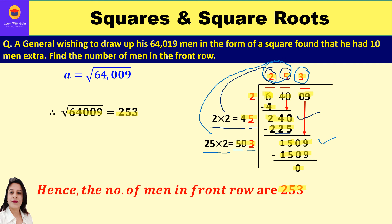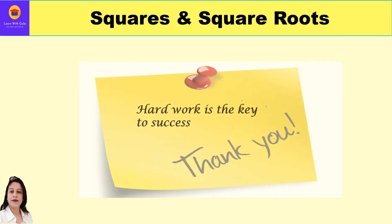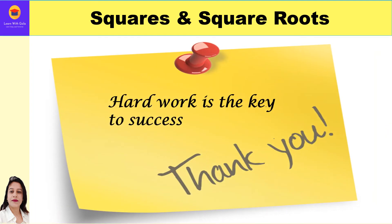Hence the number of men in the front row, or in each row, is 253. I hope you have enjoyed the video and understood both word problems. Please do like and subscribe to my channel. Thank you everyone, have a great day ahead.